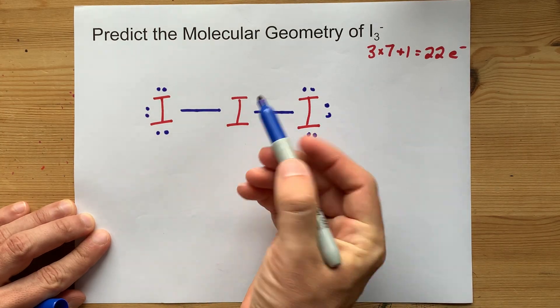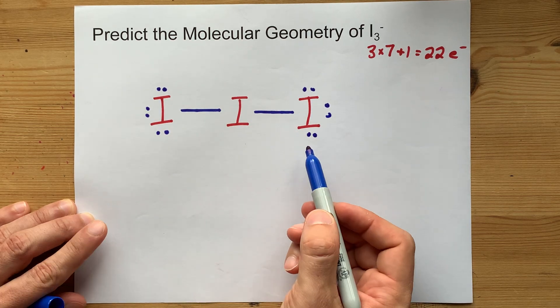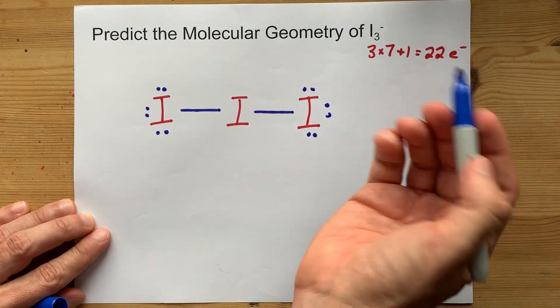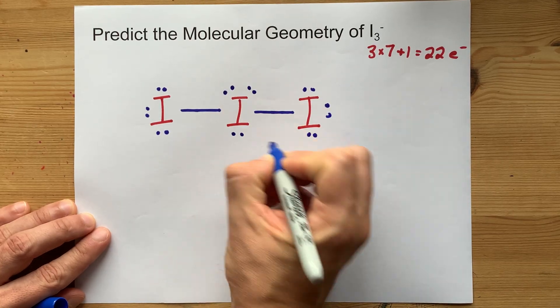And then I dump extra electrons on the center atom. Now, I already have 16 electrons here, and I need 22. So, 17, 18, 19, 20, 21, 22.